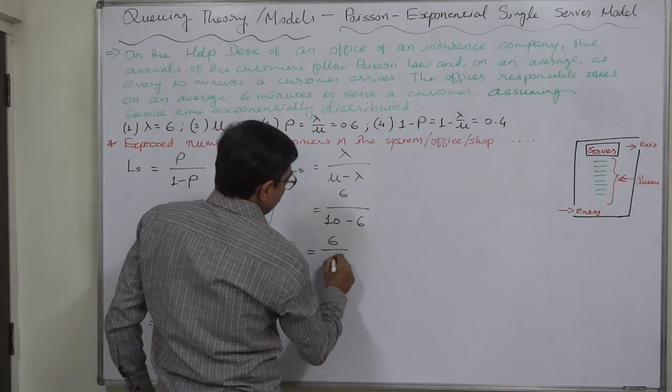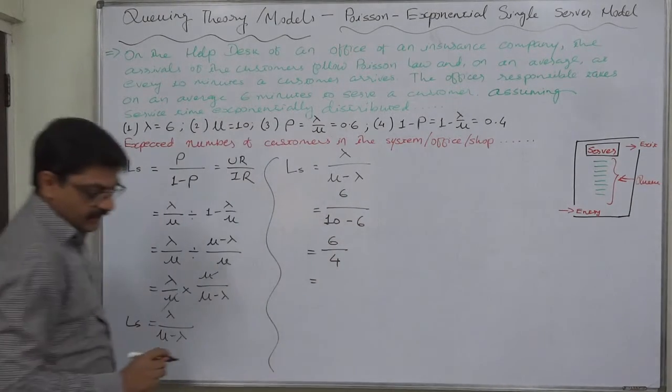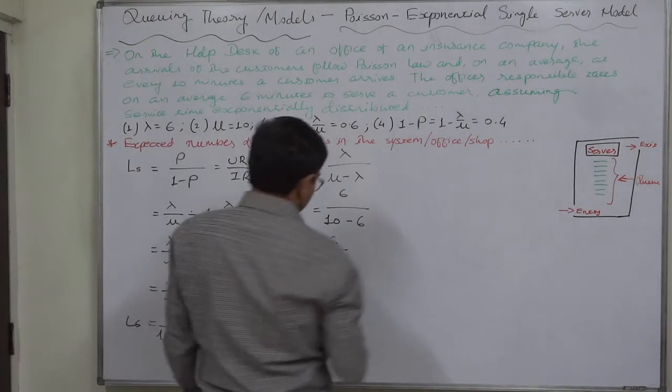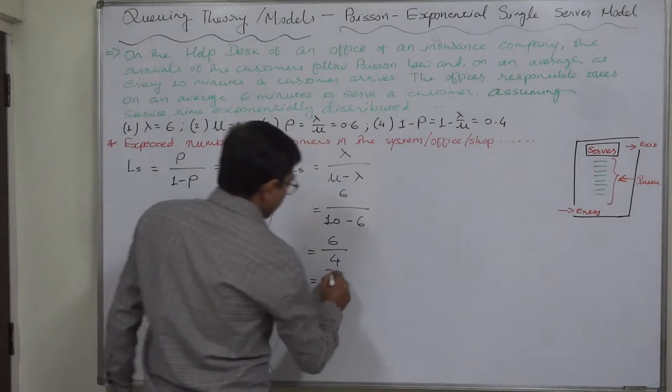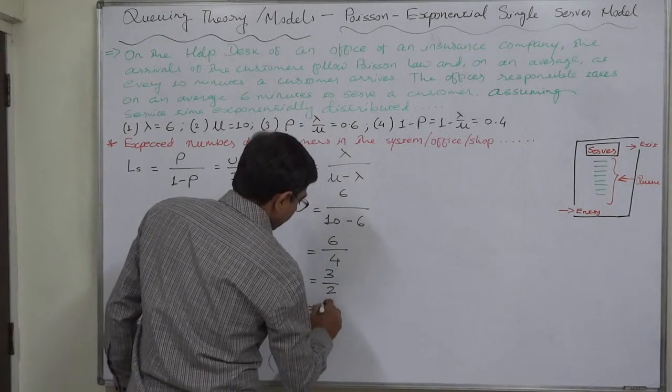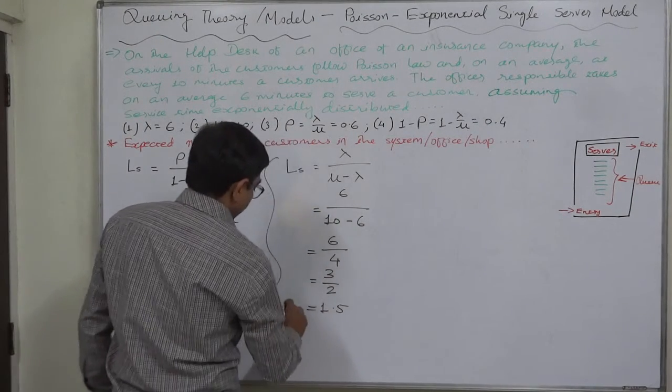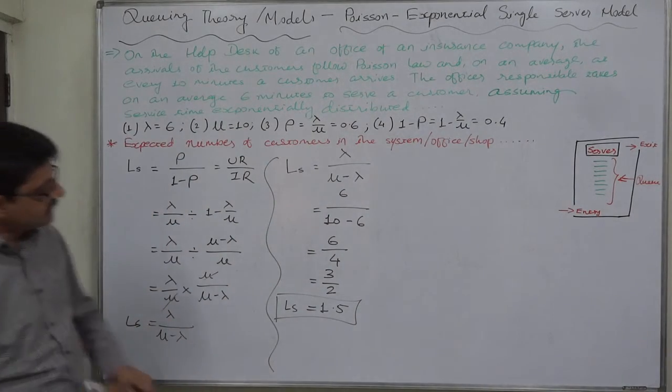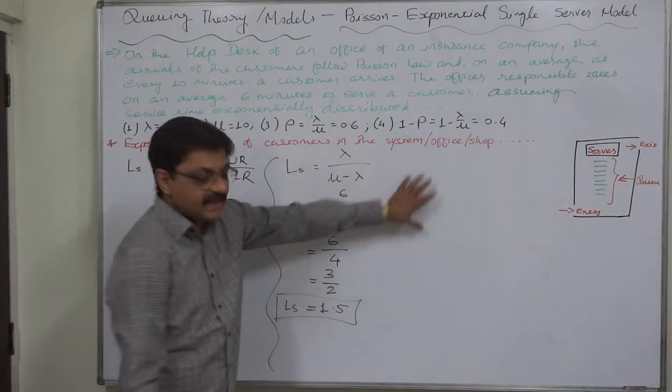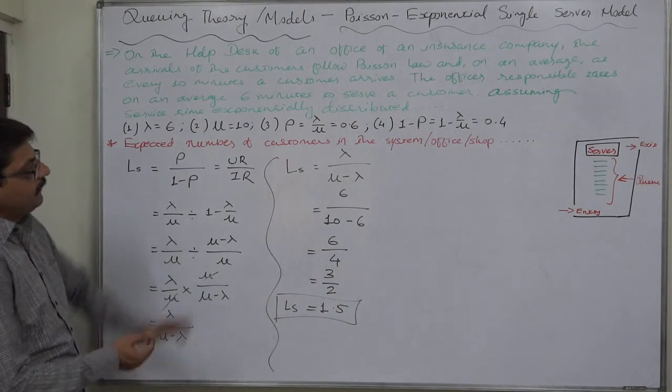6 by 4 - what is the value of 6 by 4? It is 3 by 2, or it is 1.5. So the expected number of customers in the system or office is 1.5 for this particular case.